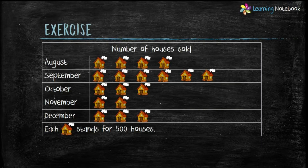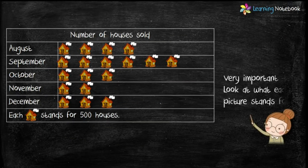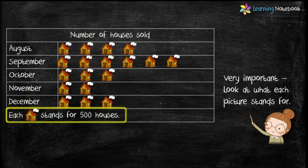Now let's do a question based on a pictograph. Here in this pictograph we are given the number of houses sold from August to December. It is very important to look at what each picture stands for — here each house stands for 500 houses. To calculate the number of houses sold in each month, we count the number of pictures and multiply by 500. For example, in August there are four pictures, so houses sold equals 4 × 500 = 2000.